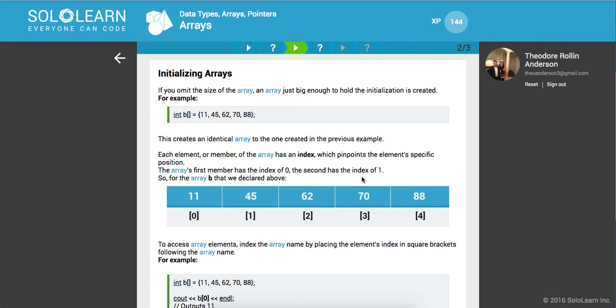If you omit the size of the array, an array just big enough to hold the initialization is created. Here's a good example. We don't actually pass in the size, we pass in five elements. So in that case, if we tried to insert another element into our array, we would also get a compile time error. This creates an identical array to the one created in the previous example.